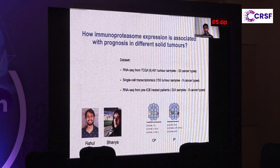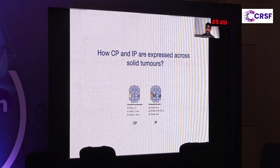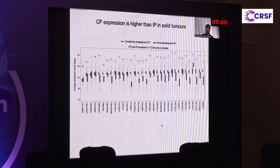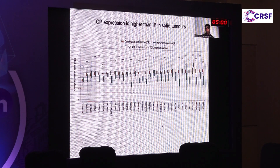In all cases, we looked at the expression levels of constitutive and immunoproteasome, defined as the average expression of individual subunits specific to each type. We first asked how constitutive and immunoproteasome expression is present across solid tumors, since we know that immunoproteasome expression is a good prognostic factor in hematological cancers, but their association in solid tumors is not well known.